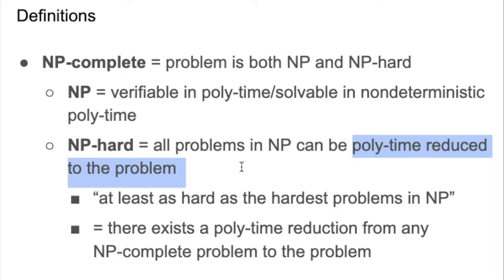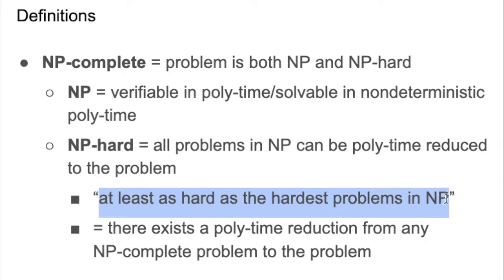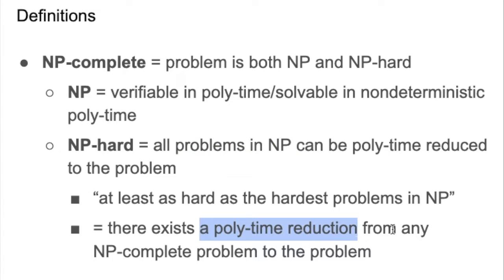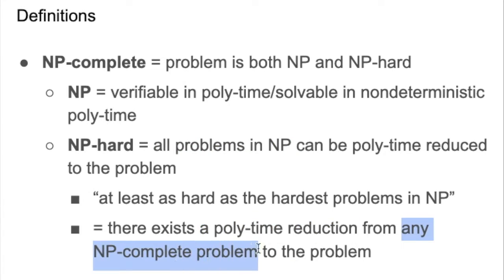A mapping reduction tells you that you're at least as hard as the problem or language that you reduced from. But providing a polytime reduction from all problems in NP is not something you can do, because there are infinite problems. So instead, to prove that something is NP-hard, we just need to provide a polytime reduction from any NP-complete problem.